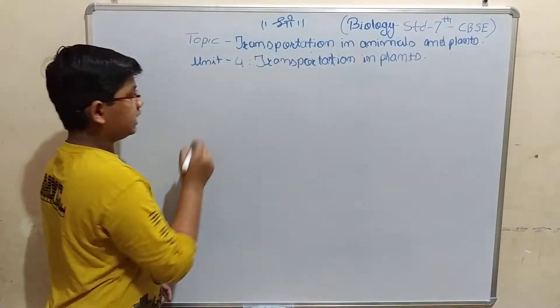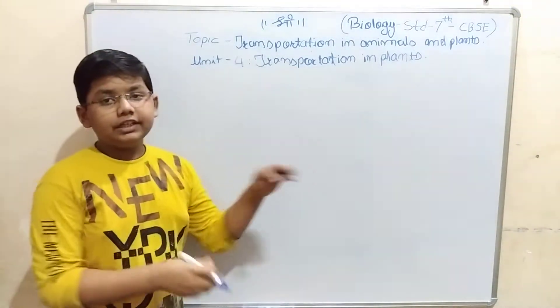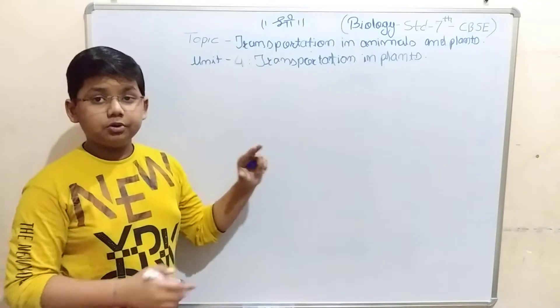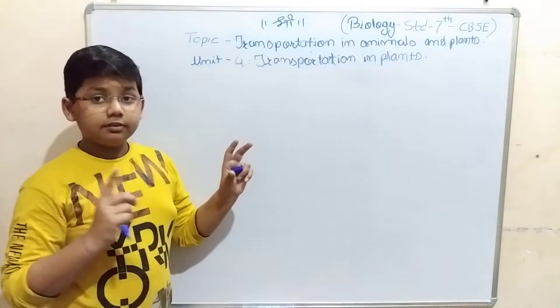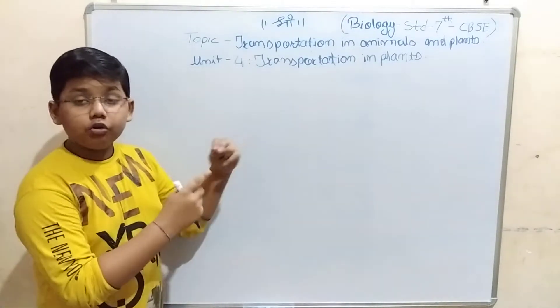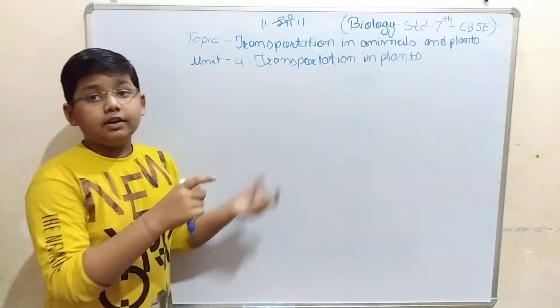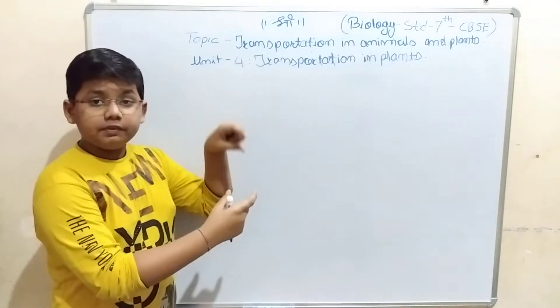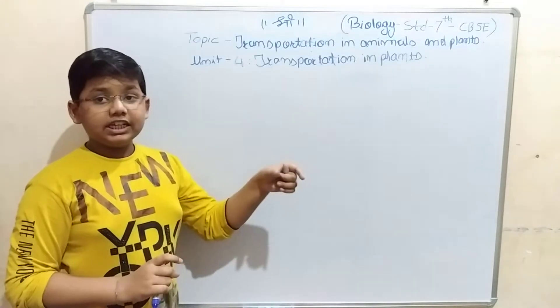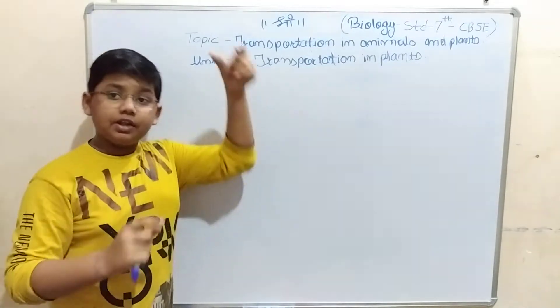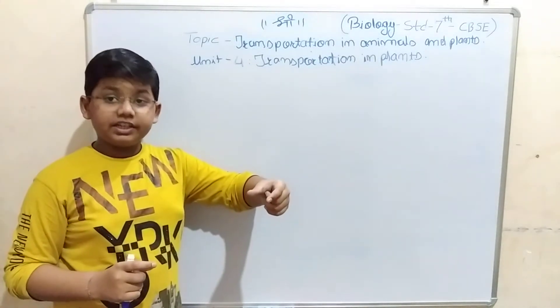For example, we will do one experiment. First, take a large size potato, cut it from one end to make the base flat. Then make a hollow cavity inside that potato and fill it with sugar solution. Mark the level and then put it inside a beaker containing water.